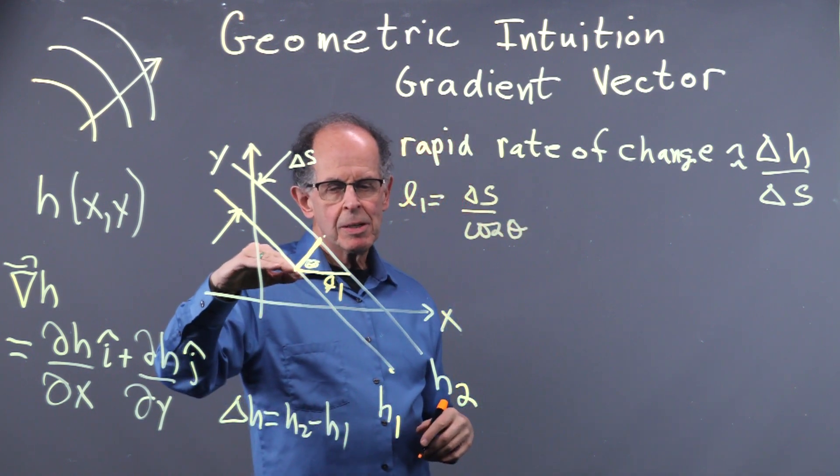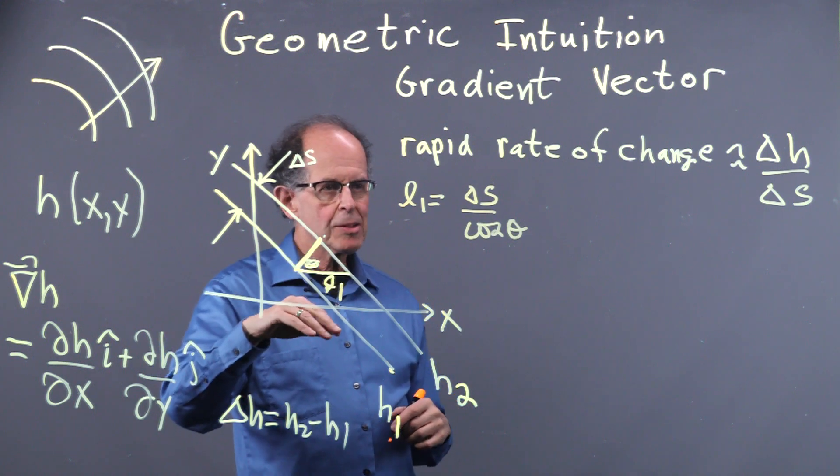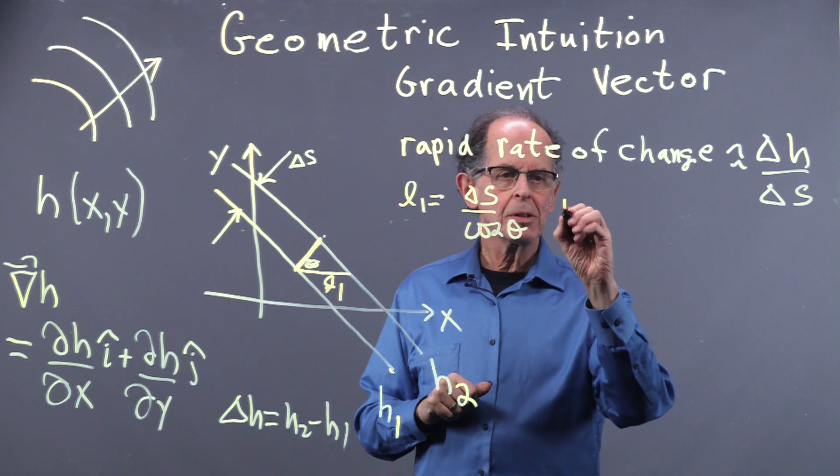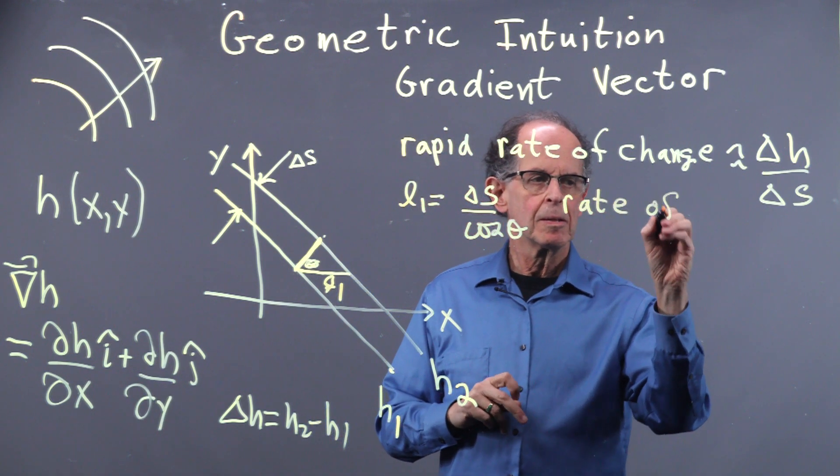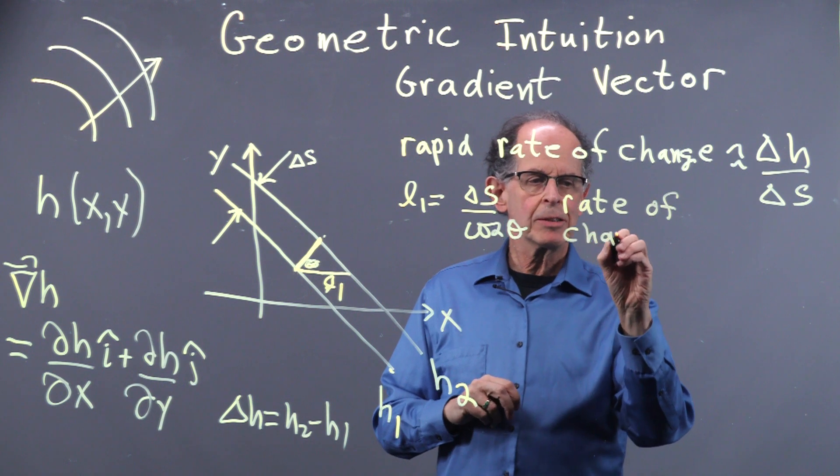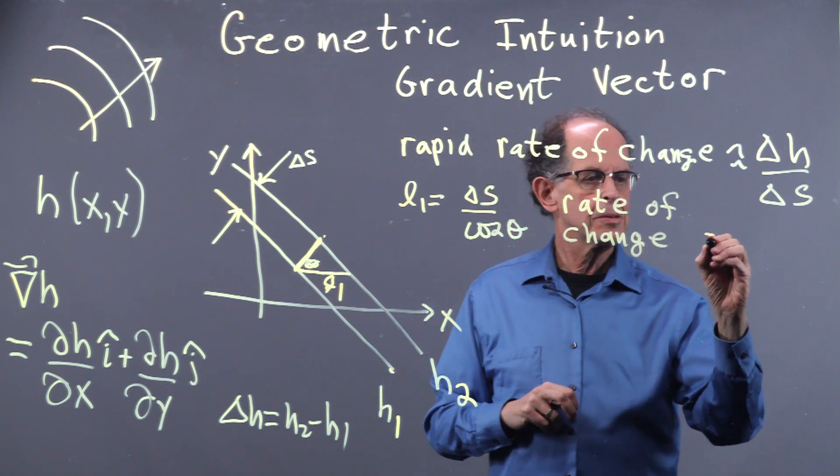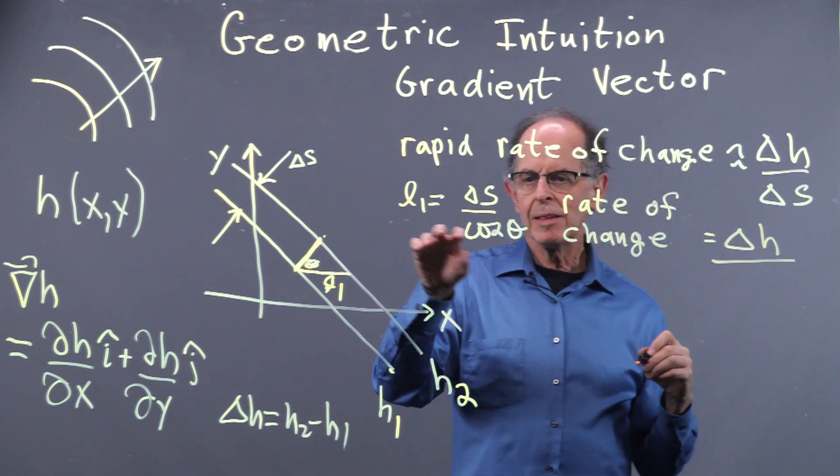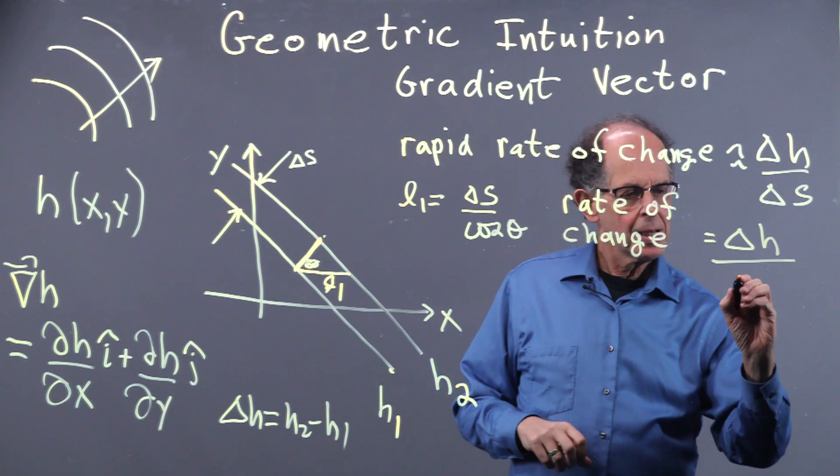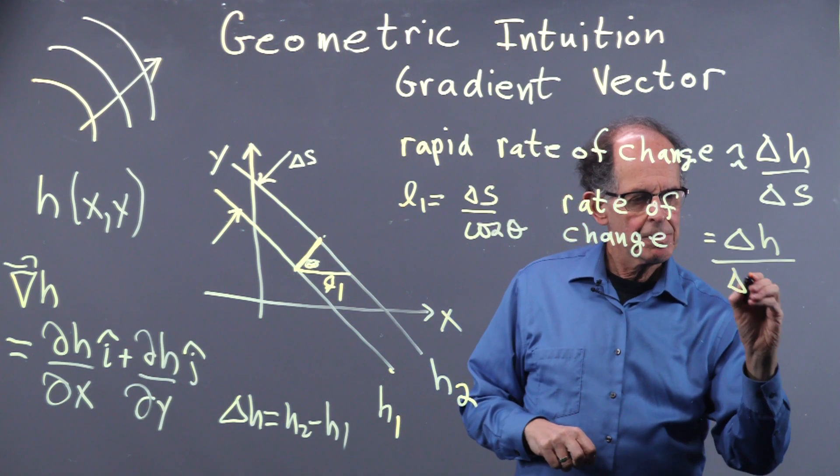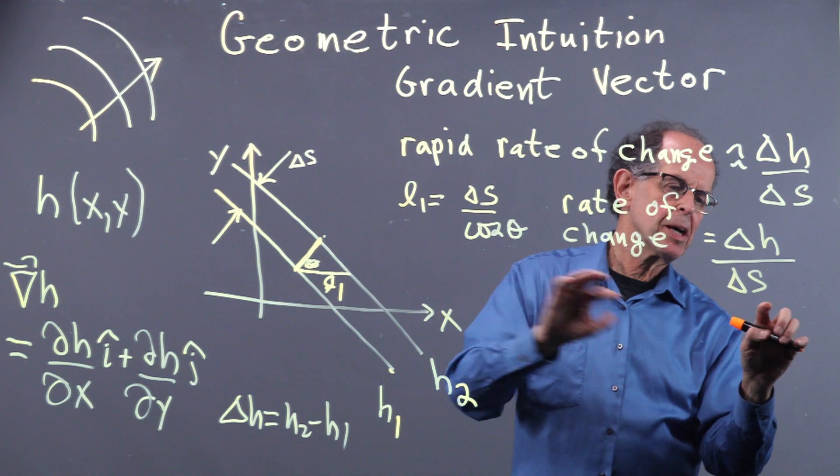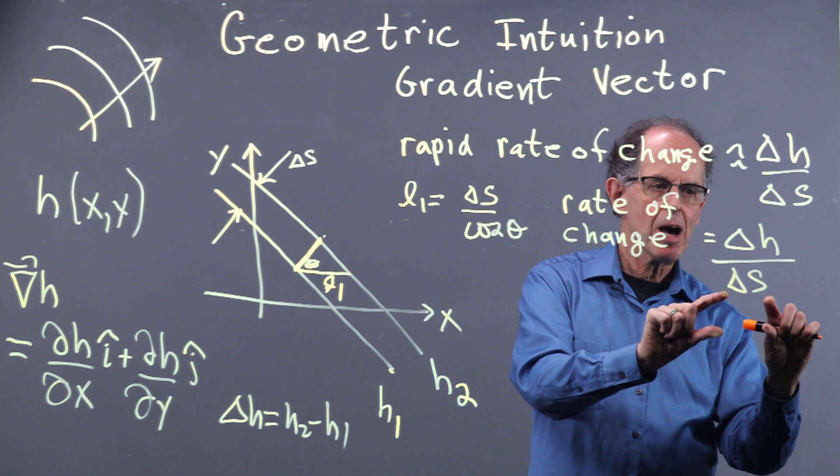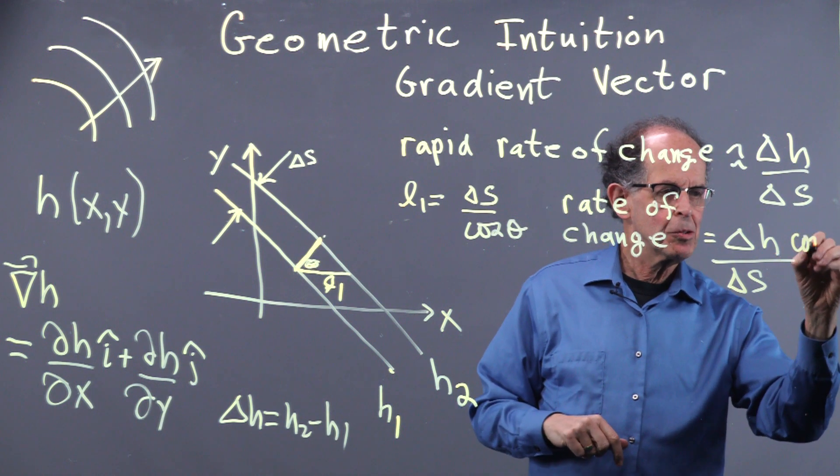And L1 is equal to delta S over cosine theta. That means if we're moving in that direction, parallel to the X axis, a distance L1, our rate of change in that direction is equal to delta H divided by delta S over cosine theta. So I can write the cosine theta there, but it's in the denominator of the denominator, which goes up in the numerator.